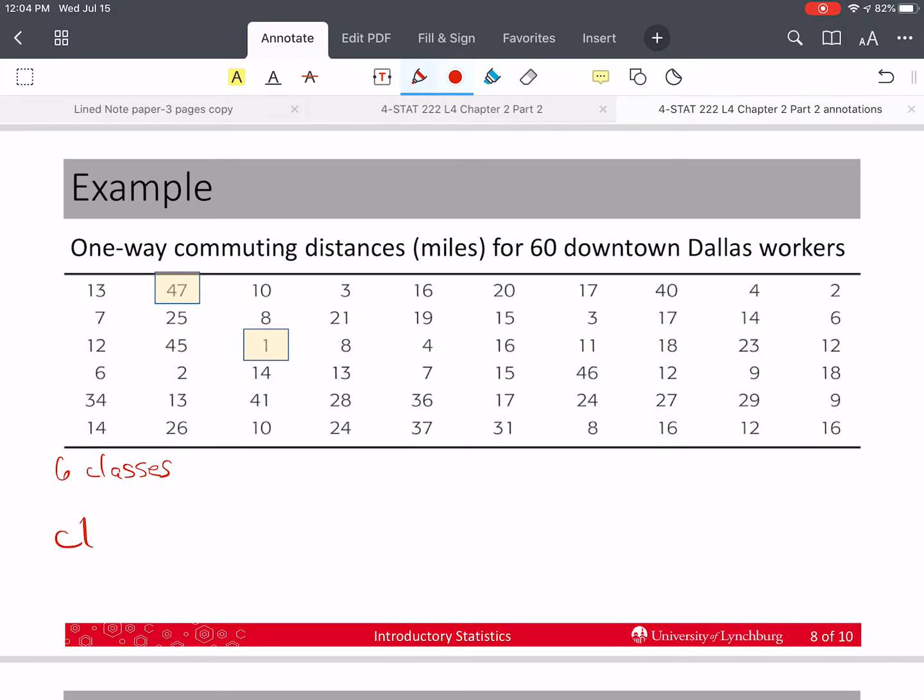So the next thing that's very important for us to calculate is the class width. And this is going to be the max value, which I've already circled here for you, or highlighted, minus the minimum value. Again, I already highlighted that for us. Divided by the number of classes, which is six. And so this is 46 over six. And this turns out to be 7.6 and the sixes continue. The rule says that no matter what number I get here, I always increase it to the next whole number.